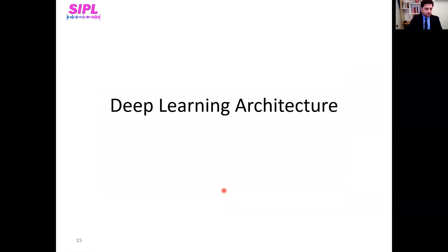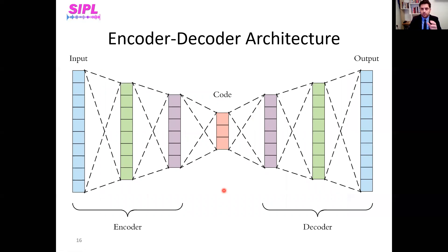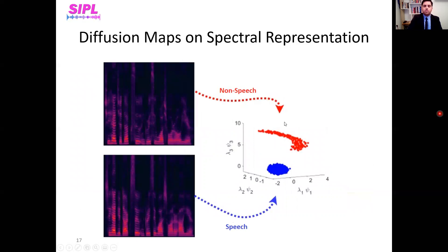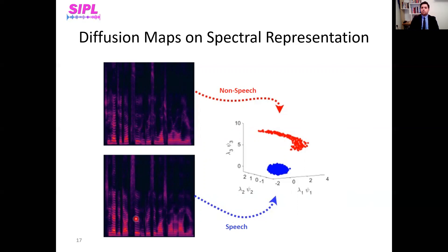In the deep learning architecture, we use an encoder-decoder architecture that tries to efficiently encode the input, reduce noise, and then decode the clean version of the input to the output, performing encoding and decoding from the encoder to the decoder. On the left side of the screen, we can see two MFCC representations — the top one is of non-speech frames and the bottom one is of speech frames. On the right side, we can see the corresponding diffusion map embeddings in three dimensions. In red, we can see the non-speech diffusion maps embedding, and in blue, we can see a distinguished structure that is of the speech-related signals.